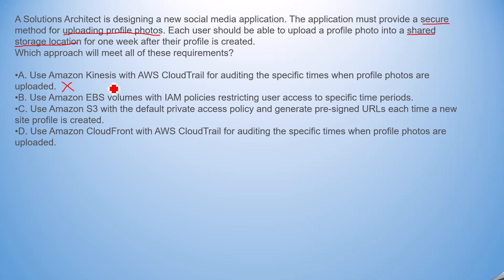Option B: Use Amazon EBS volumes with IAM policy restricting user access to a specific time period. That could be an answer, but the problem is that using EBS volumes as a shared storage location is difficult. It is also too hectic to create IAM policies for multiple users — whether they are Android users, iOS users, or web application users. Creating IAM policies for all these users is a tedious job, so I'm not marking it as wrong just yet.